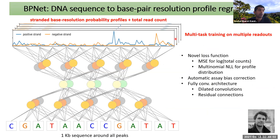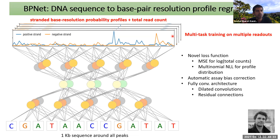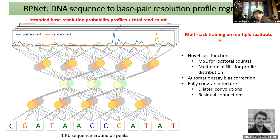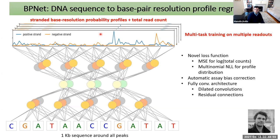We applied this model — called BPNet — to four famous pluripotency transcription factors: Oct4, Sox2, Nanog, and Klf4. These are used to reprogram cells. We looked at these proteins in mouse embryonic stem cells using high-resolution ChIP-nexus experiments. We trained on a subset of chromosomes and evaluated on held-out chromosomes. There's a question from the class but we have very little time, so Anshul please continue.